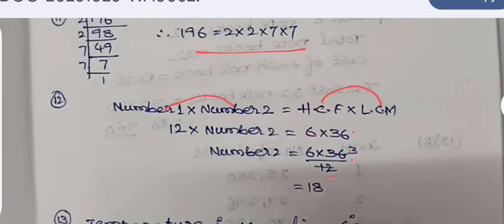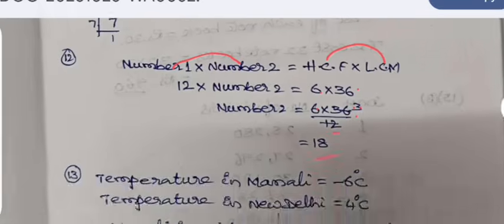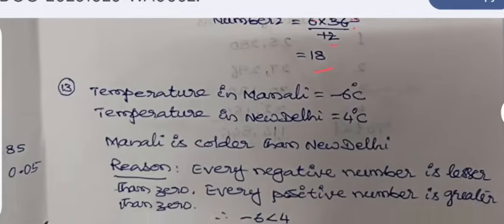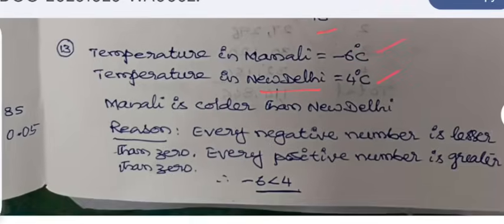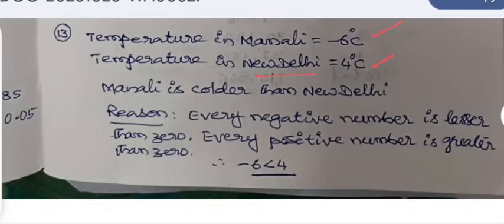By 12 we cancelled 36 three times. 3 × 6 is 18. So the temperature in Manali is -6 degrees, temperature in New Delhi is 4 degrees centigrade. This is a positive number and this is a negative number. Negative number is always lesser than a positive number, so that's why this is the smallest one, that is -6 degrees. So Manali is colder than New Delhi.